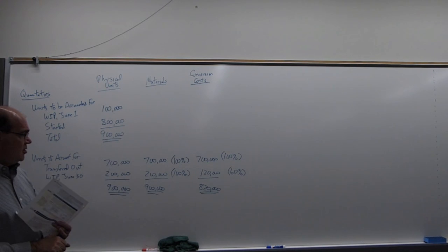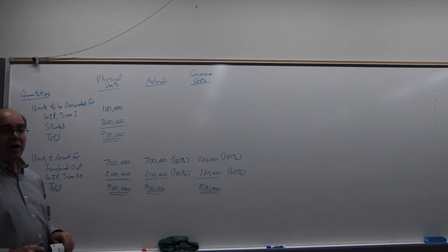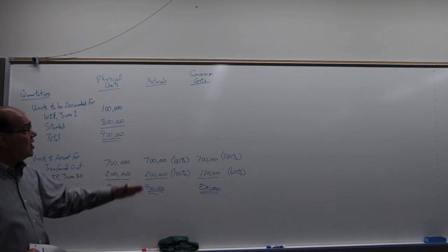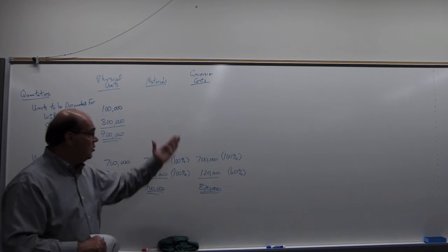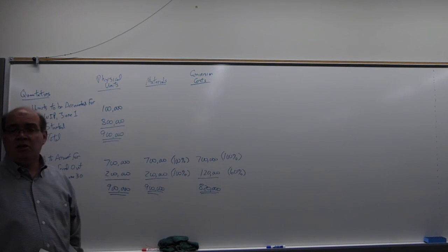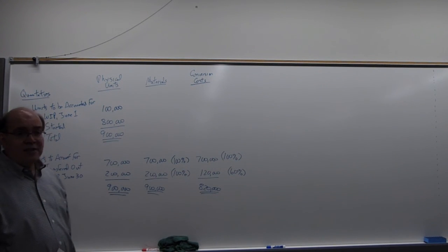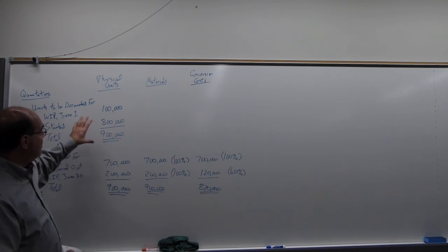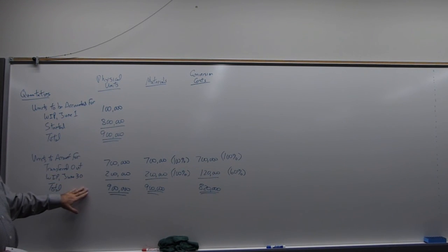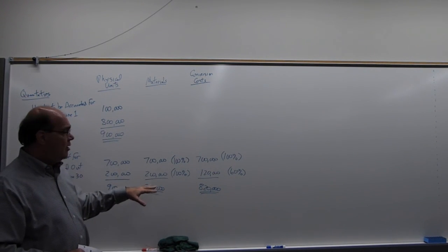People ask, should materials and conversion equivalent units be the same? If they are, you're probably wrong — we wouldn't go through these steps if we didn't expect them to be different. They should almost always be different. That completes step one and step two: how many units, where they went, and how much work was done.